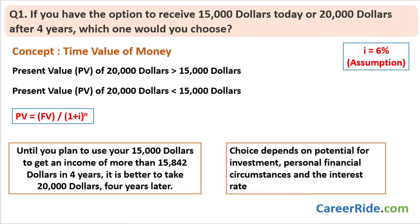Our first question is: if you have the option to receive $15,000 today or $20,000 after four years, which one would you choose? It's a pretty interesting question because it is a human being's instinct to receive money immediately. But this particular question is based on the concept of time value of money.